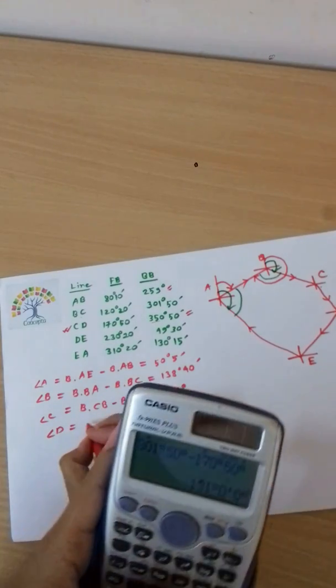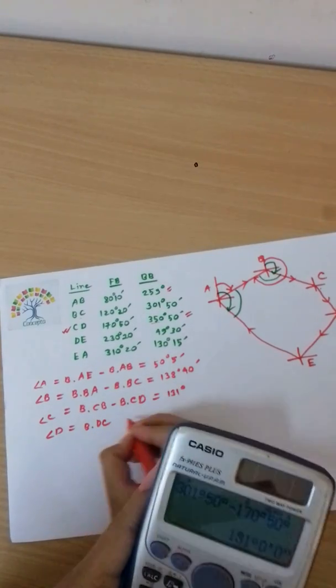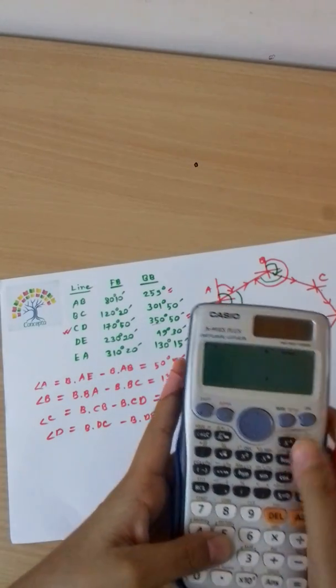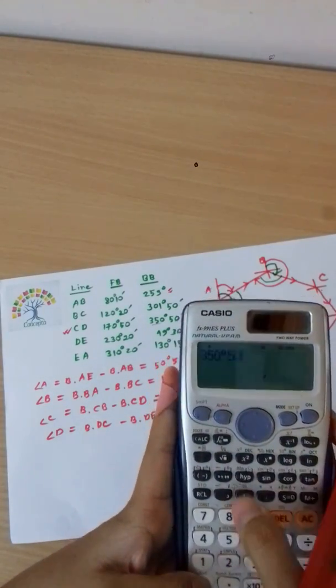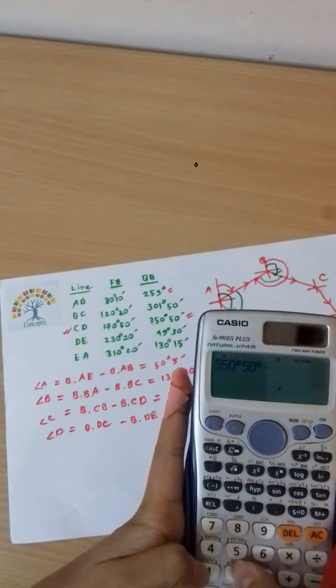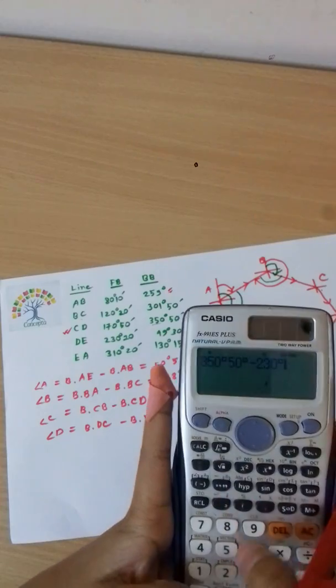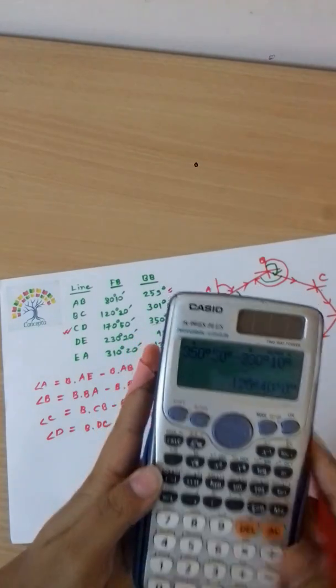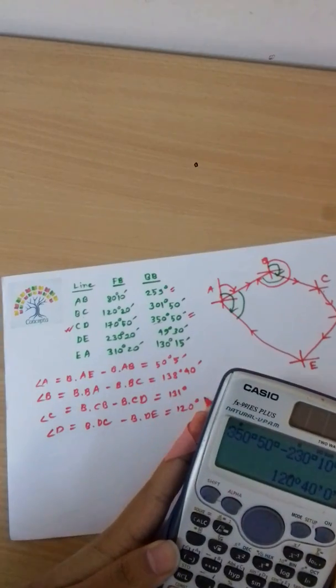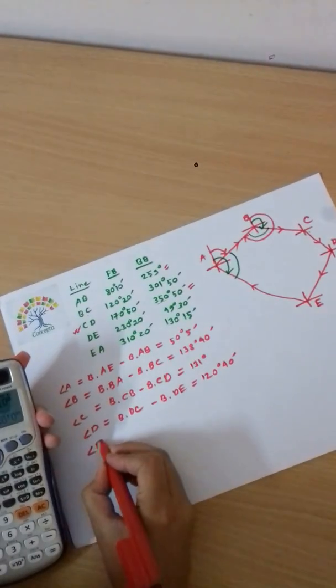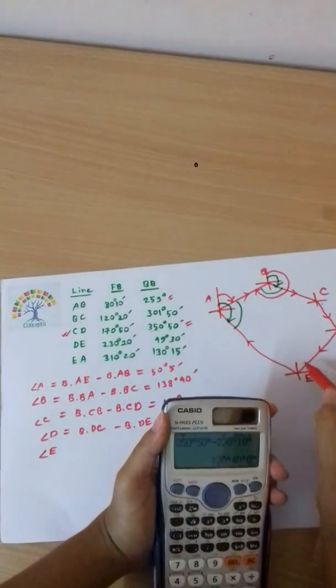Angle D: bearing of DC minus bearing of DE. That's 350 degrees 50 minutes minus 230 degrees 10 minutes, giving us 120 degrees 40 minutes.